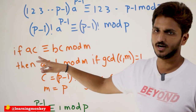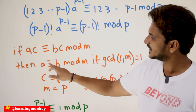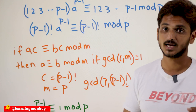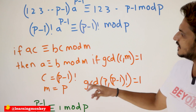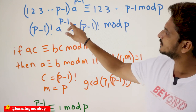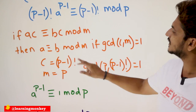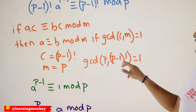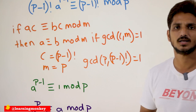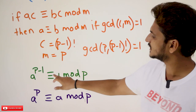This is in the form of a property we clearly discussed in our last class: if ac ≡ bc (mod m), then we can write a ≡ b (mod m), if gcd(c, m) = 1. Here, c is (p-1)! — both sides have (p-1)!. Here, a is a^(p-1) and b is 1. So m is p. This can be written as a^(p-1) ≡ 1 (mod p), if gcd(p, (p-1)!) = 1. Yes, gcd(p, (p-1)!) = 1, because p is a prime number. So that's why we can write: a^(p-1) ≡ 1 (mod p).